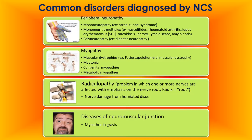Common disorders diagnosed by nerve conduction studies include peripheral neuropathies. Mononeuropathy affects only a single nerve — most commonly carpal tunnel syndrome, commonly seen in females. Mononeuritis multiplex includes vasculitides, rheumatoid arthritis, systemic lupus erythematosus (SLE), sarcoidosis, leprosy, Lyme disease, and amyloidosis. Polyneuropathy affects many nerves and is usually diabetic neuropathy, a common long-term complication of diabetes mellitus. The studies also diagnose myopathies such as facioscapulohumeral muscular dystrophy, myotonia, congenital myopathies, and metabolic myopathies. Radiculopathy — inflammation or damage to nerve roots caused by herniated discs — and diseases of the neuromuscular junction such as myasthenia gravis are also diagnosed.